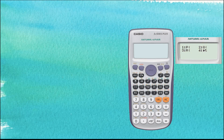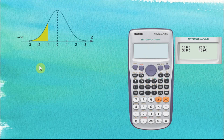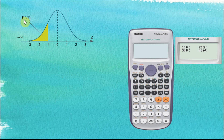Remember, all of these are used to find the area under the normal distribution curve for certain sections. For example, if we would like to find the area from negative infinity to negative 1, we can use P. P is used to find the area from negative infinity to a certain number. We key in the number inside brackets.